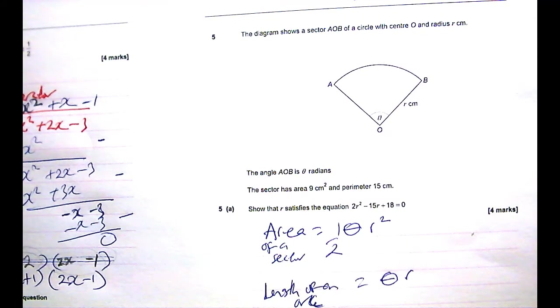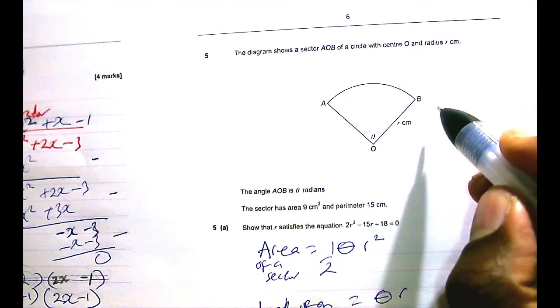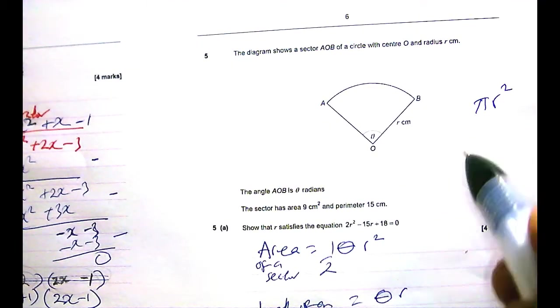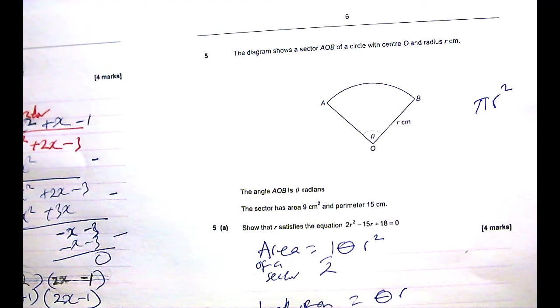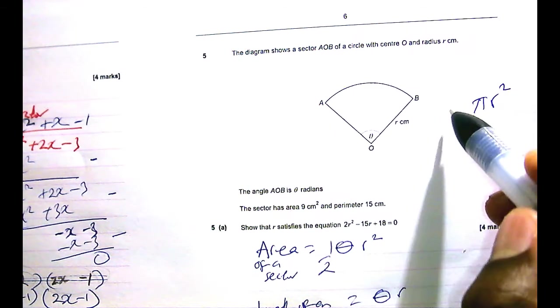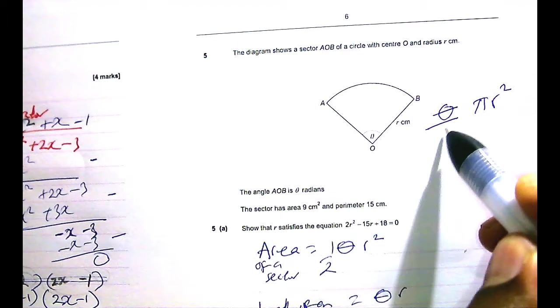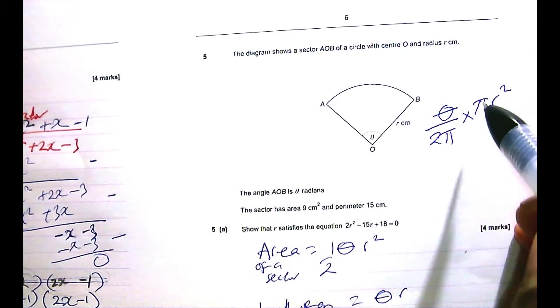Now, how do we come about formulas like this? Ideally, in a circle, the area is πR². But when you take a fraction of a circle, then the area becomes the fraction of the actual circle. So in this case, the fraction is defined by θ over 2π. So θ over 2π is the fraction of the circle.